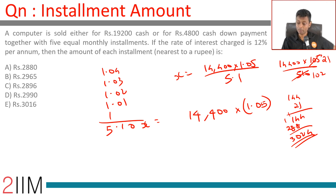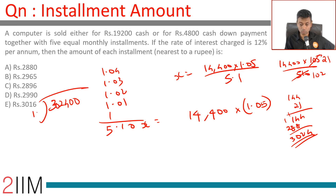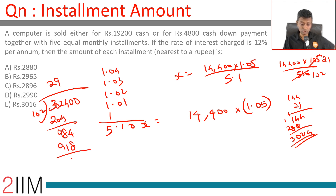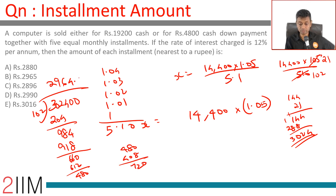Multiplying these two gives us 3,024, so we're doing 302,400 divided by 102. Working through the long division: 102 into 984 gives 918, remainder 66; 660 divided by 102 gives 612, remainder 480; 102 into 480 gives 408, remainder 72. This yields approximately 2,964.7.